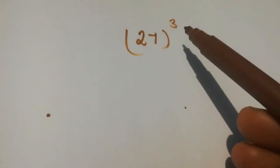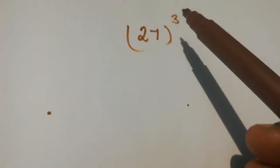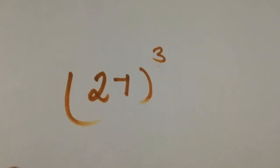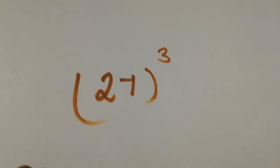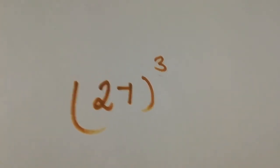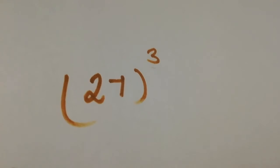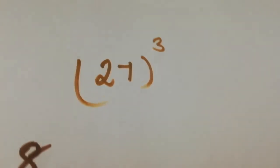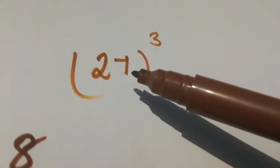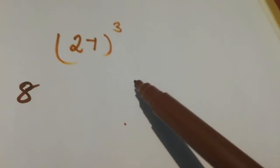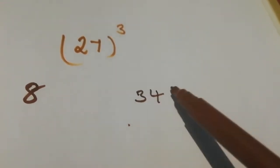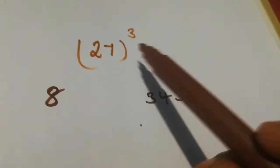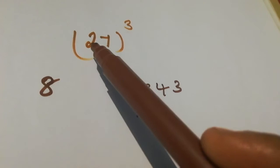Okay, now I have written 27 cube. So find the cube of 27. Here we can use three steps. The first step is to write the cube value of the separate digits. So first, the cube value of 2 is 8, then the cube of 7 is 343.